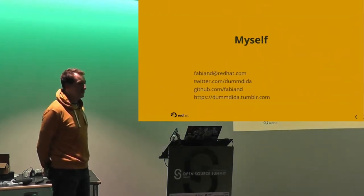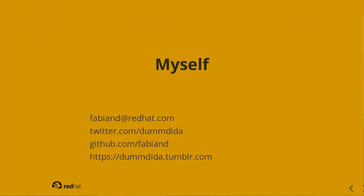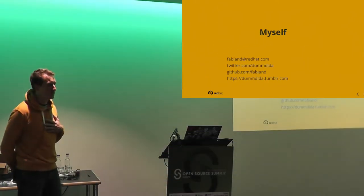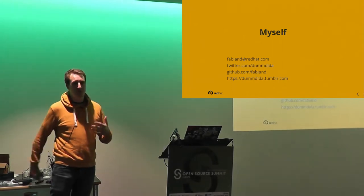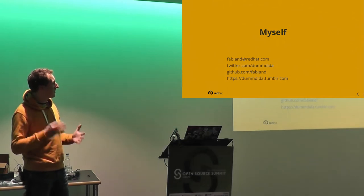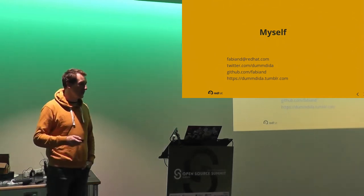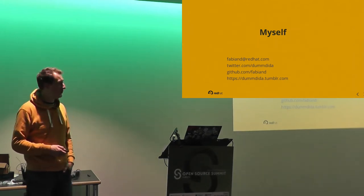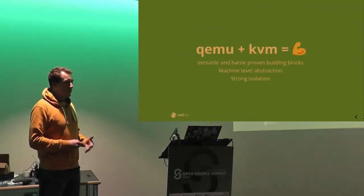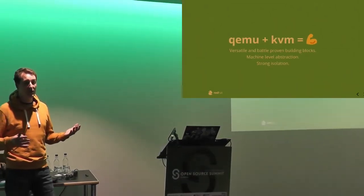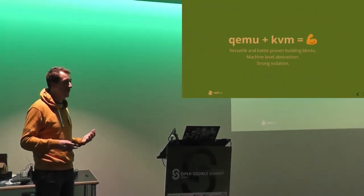I'm Fabian Deutsch. I'm working at Red Hat on virtualization for the last six years. I started with oVirt, but it's pretty across the stack — I worked on Fedora, on packaging, on low-level tunings. I really liked what I do and I still like what I'm doing today. I'm working in the context of virtualization in the container context — so with containers and how they fit together.